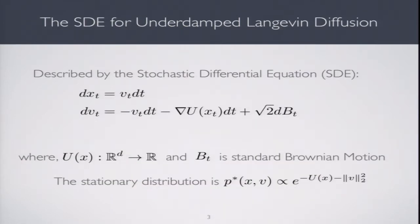What is underdamped Langevin diffusion? It can be described by this stochastic differential equation right here. Where u is the potential function, B is standard Brownian motion. The stationary distribution of the above diffusion is p* of x, v, which is e to the power of minus u(x) minus Euclidean norm of v squared. To generate a sample from just p* of x, sample from p*(x,v) and discard v.